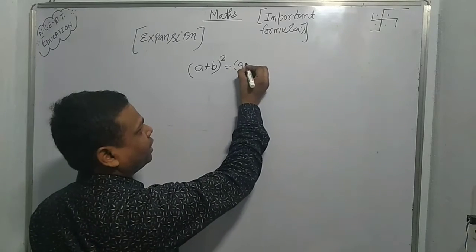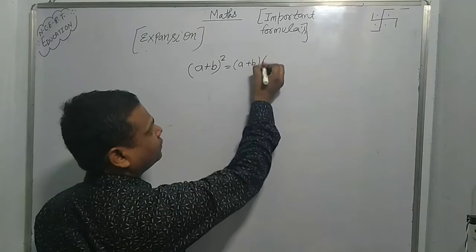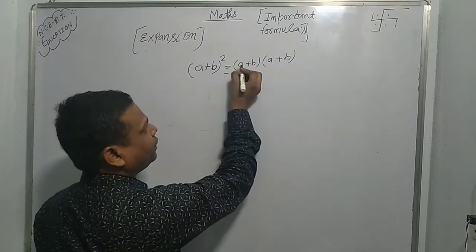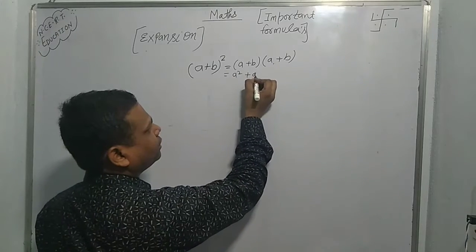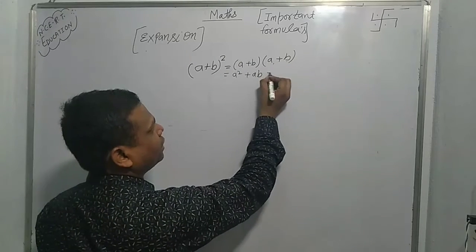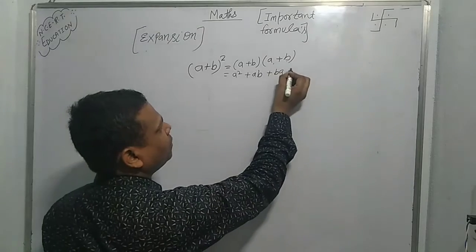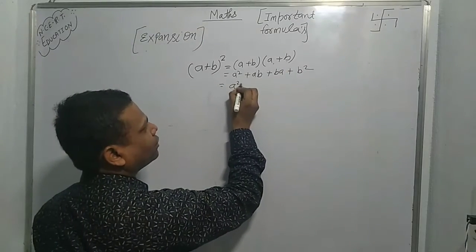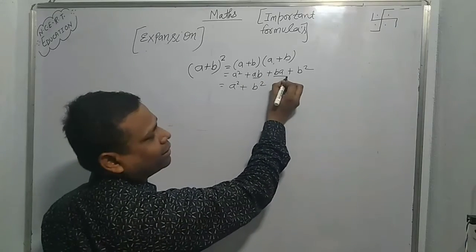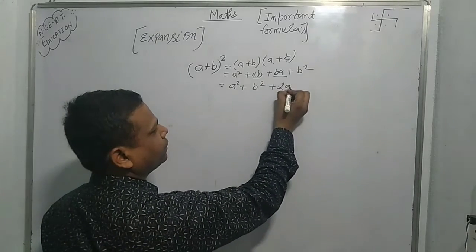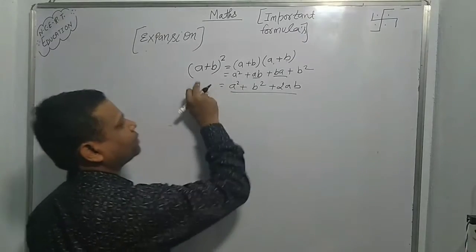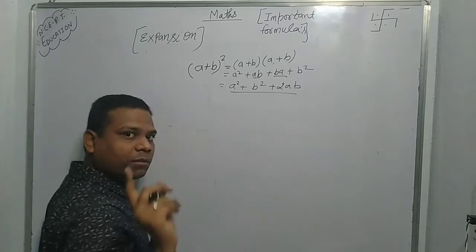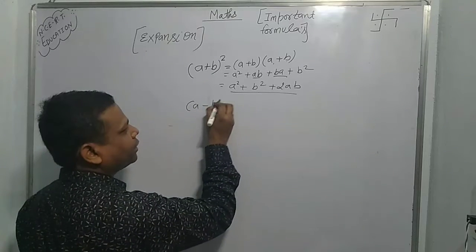To expand a plus b whole square, we write (a plus b) multiplied by (a plus b). On multiplying: a squared plus ab plus ab plus b squared. Adding like terms, ab and ab are the same, so it becomes 2ab. The formula for a plus b whole square is: a squared plus b squared plus 2ab.